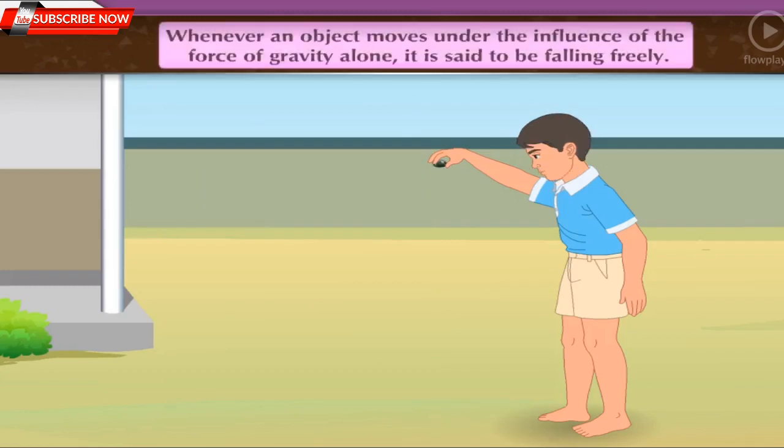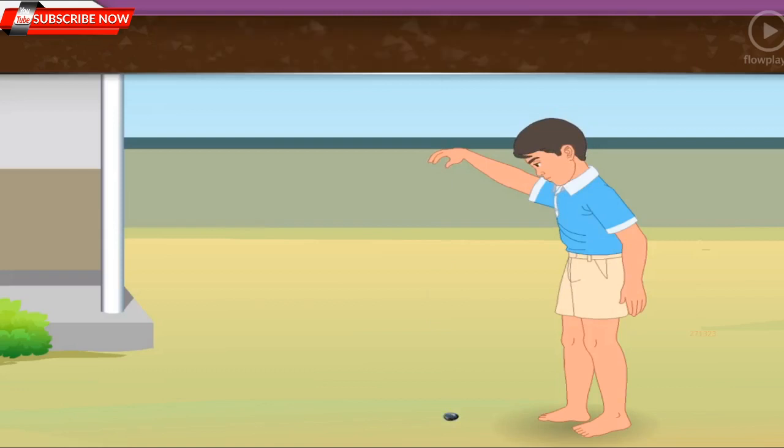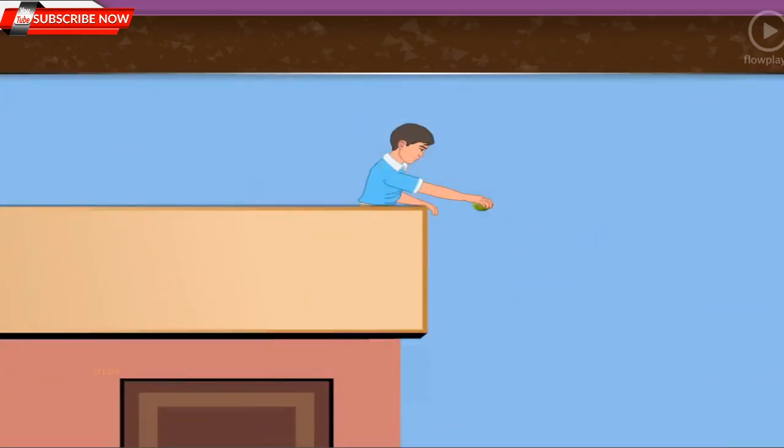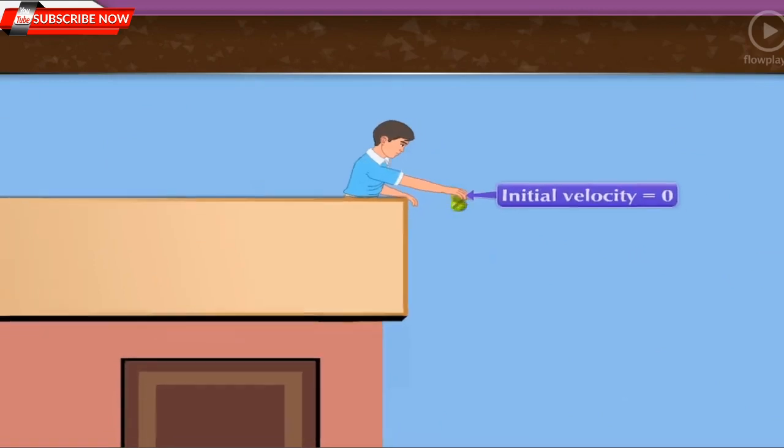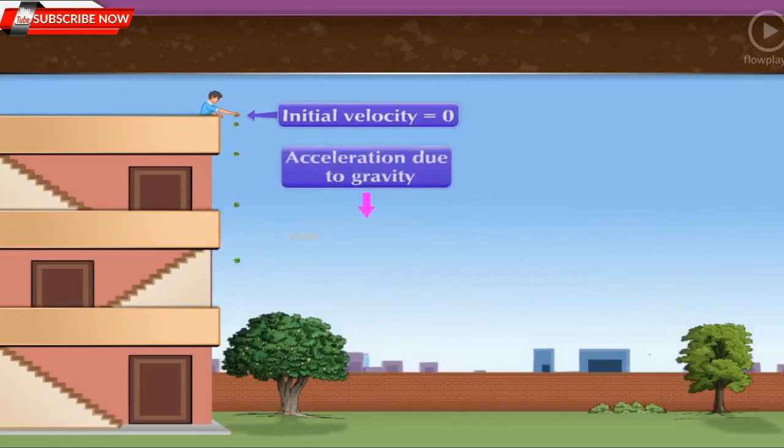Whenever an object moves under the influence of the force of gravity alone, it is said to be falling freely. Here, the released stone is in a free fall. In free fall, the initial velocity is zero and it goes on increasing due to acceleration due to gravity.